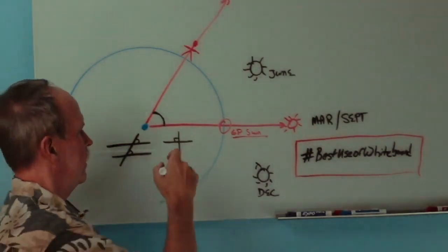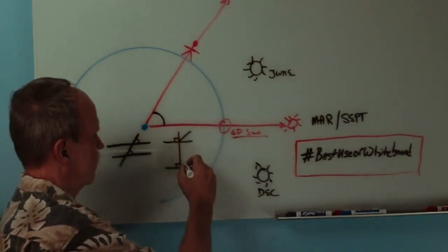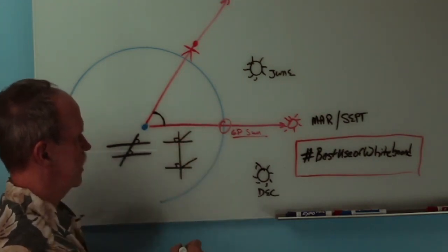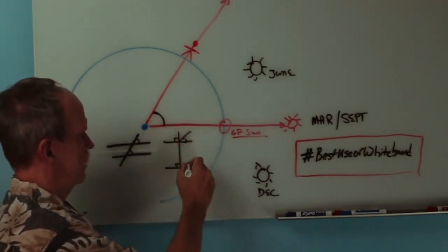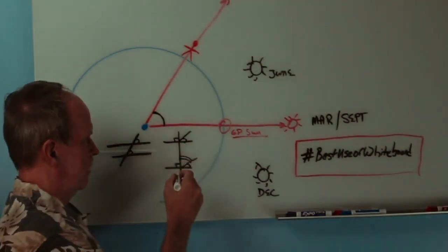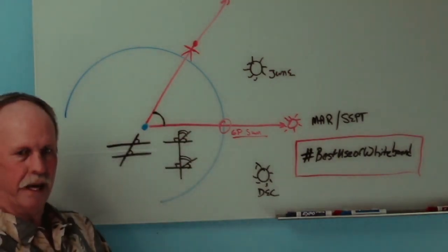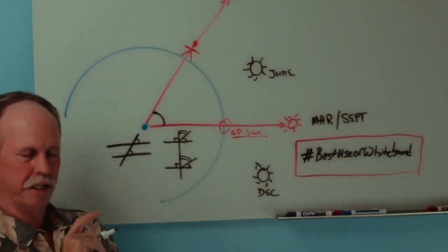Now this angle equals that angle. But more importantly, if you draw two more parallel lines, if these two lines are parallel to each other, that angle will be the same as that angle. And what's more, that angle will be the same as that angle. Now that's the principle that a sextant uses.